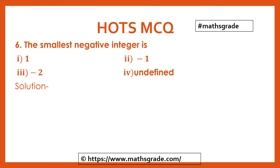Now question number 6: The smallest negative integer is — option 1: minus 1, option 2: minus 2, or option 4: not defined? Negative integers start with minus 1, minus 2, minus 3 and so on.